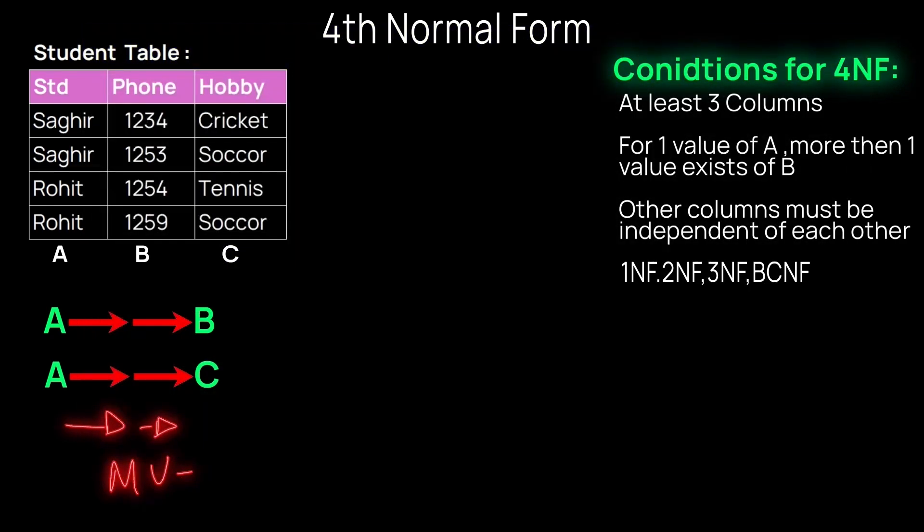This table also satisfies second normal form because there is no partial dependency — none of the multi-valued attributes are partially dependent on the key. In fact, partial dependency cannot occur here because it requires multiple keys, but there is only one key in our table. It also satisfies third normal form, which requires no transitive dependency, meaning one non-key column cannot determine another non-key column. It satisfies the BCNF condition as well.